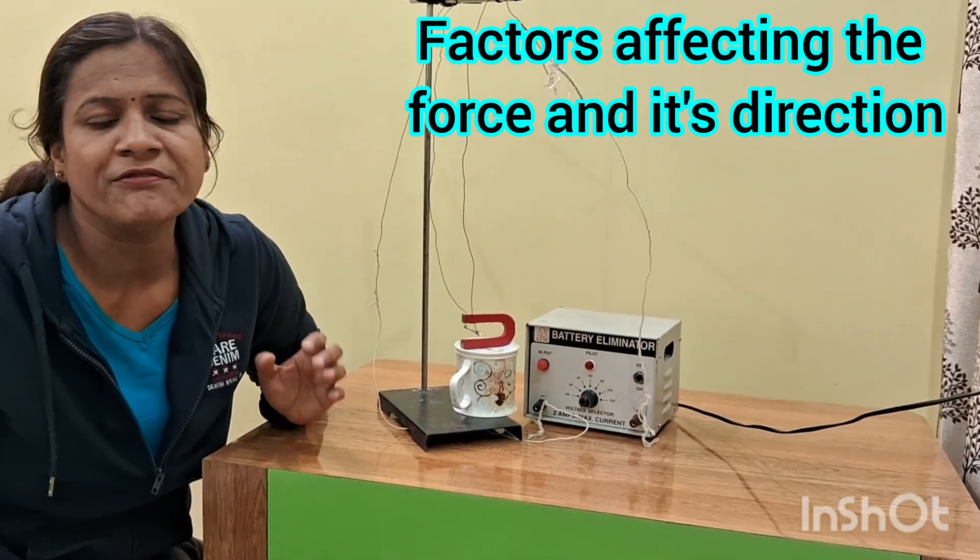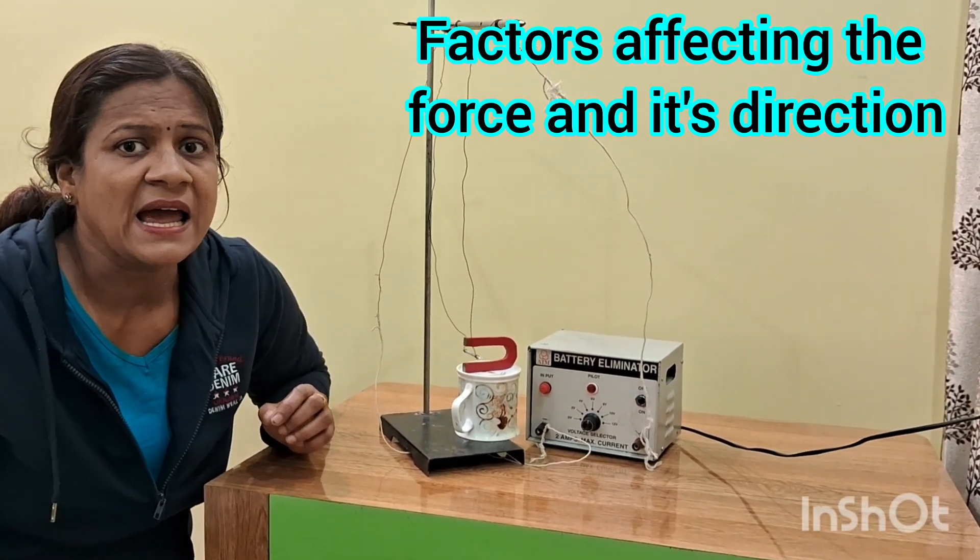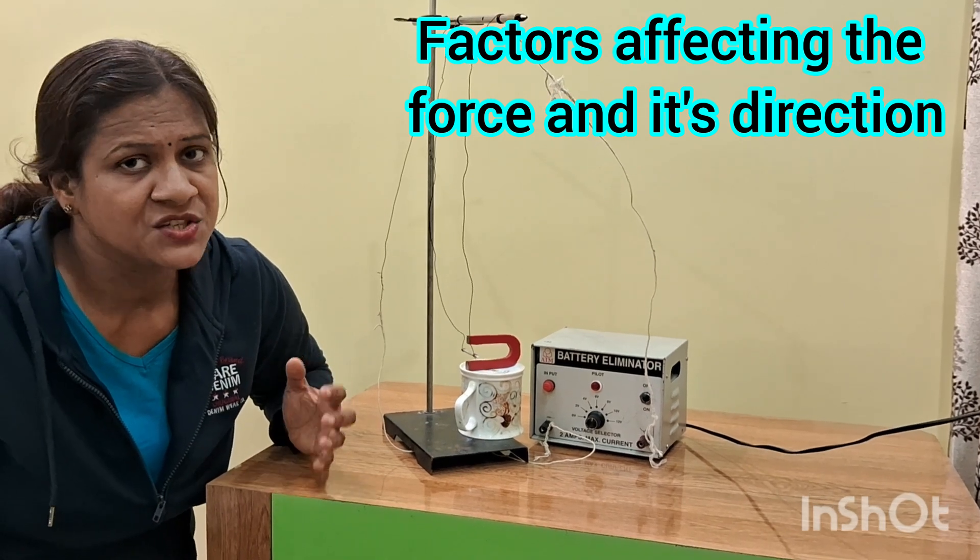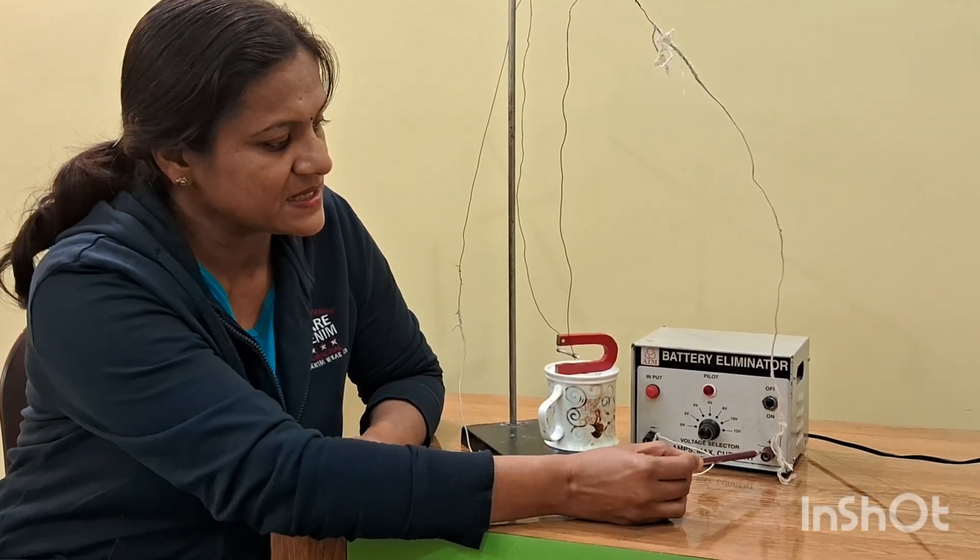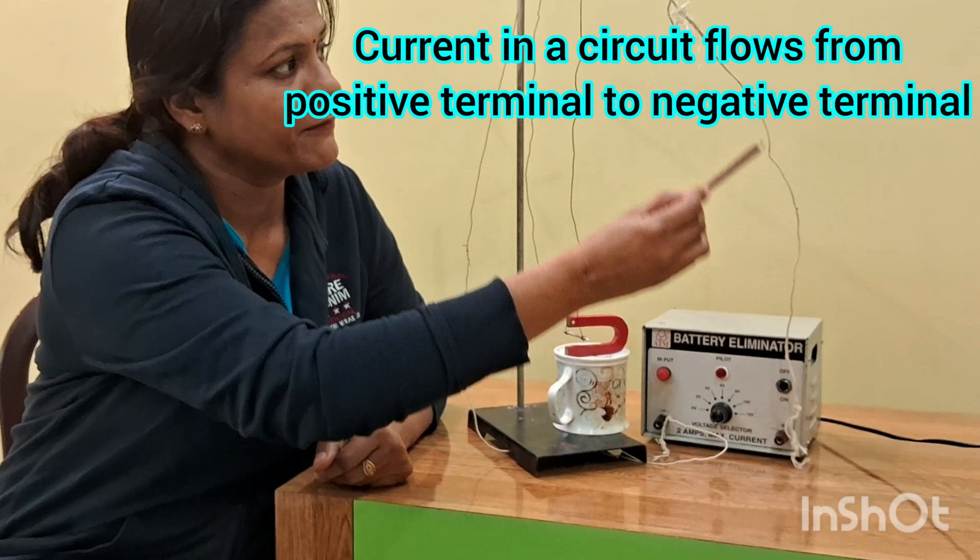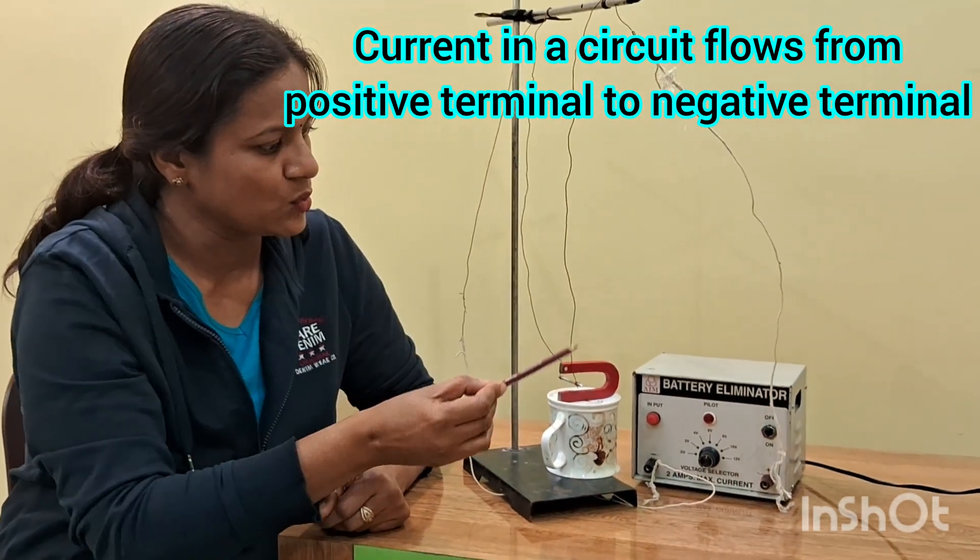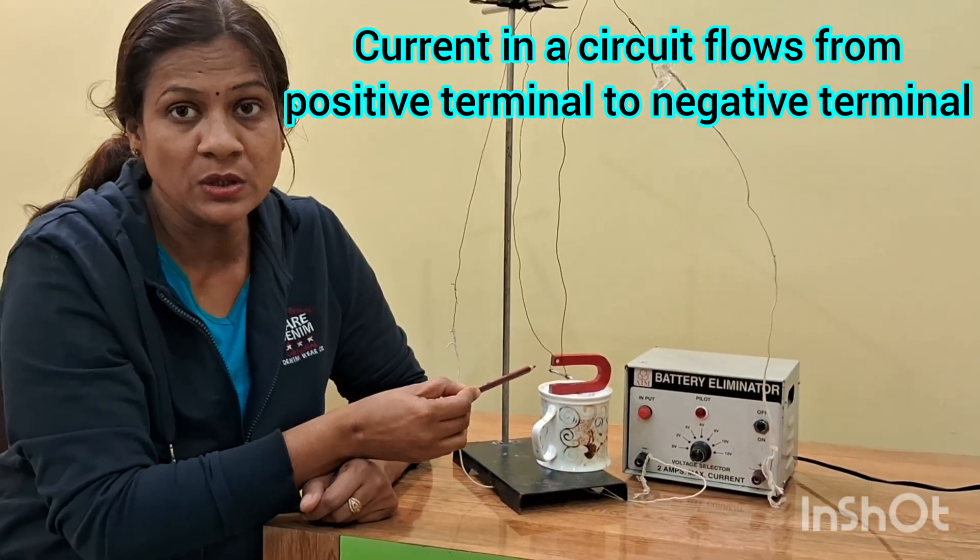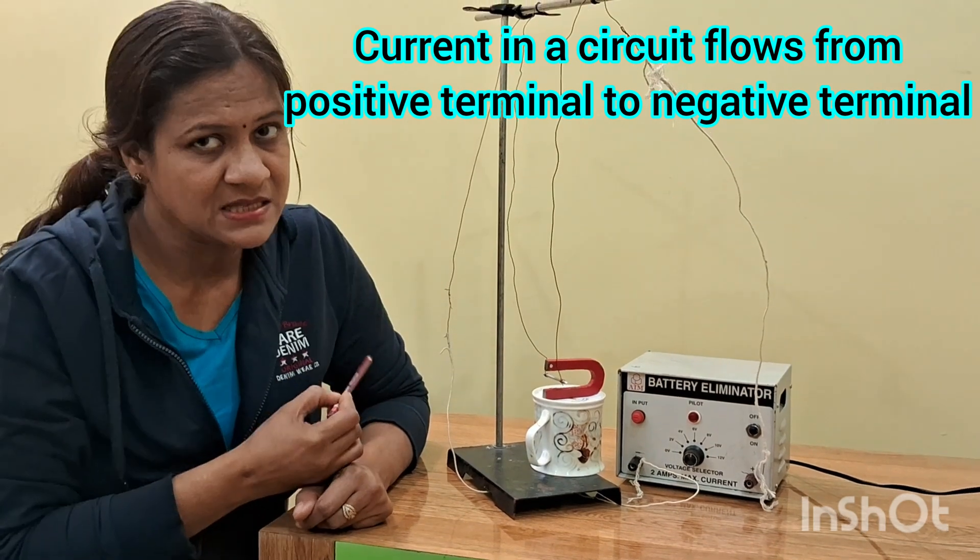Now let's understand what are the factors affecting the force and how the direction of force can change. This is the current carrying conductor and this is positive terminal. Current starts flowing from positive terminal through the wire from this side to this side, completing the circuit.